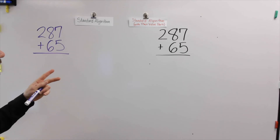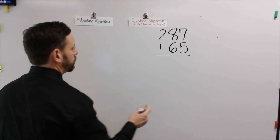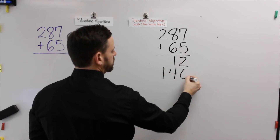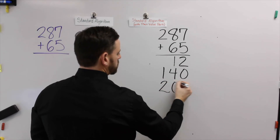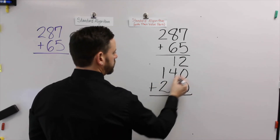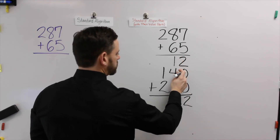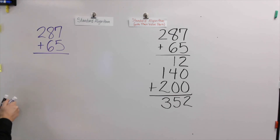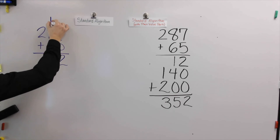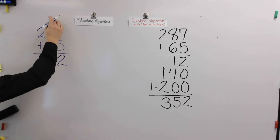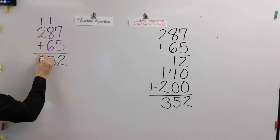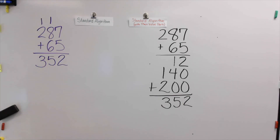For the final example, we're going to add a 3-digit number plus a 2-digit number. First with standard algorithm with place value parts: 7 plus 5 is 12; 80 plus 60 is 140; 200 plus nothing is 200. Adding all three parts together: 2 plus 0 plus 0 is 2; 10 plus 40 is 50; 100 plus 200 is 300 — giving 352. Now with the standard algorithm: 7 plus 5 is 12, regroup the 10 over here; 80 plus 60 is 140 plus 1 ten is 150, regroup the 100 here and bring down the tens; 200 and 100 is 300. That's how you use a 3-digit and 2-digit number in both the standard algorithm and standard algorithm with place value parts.